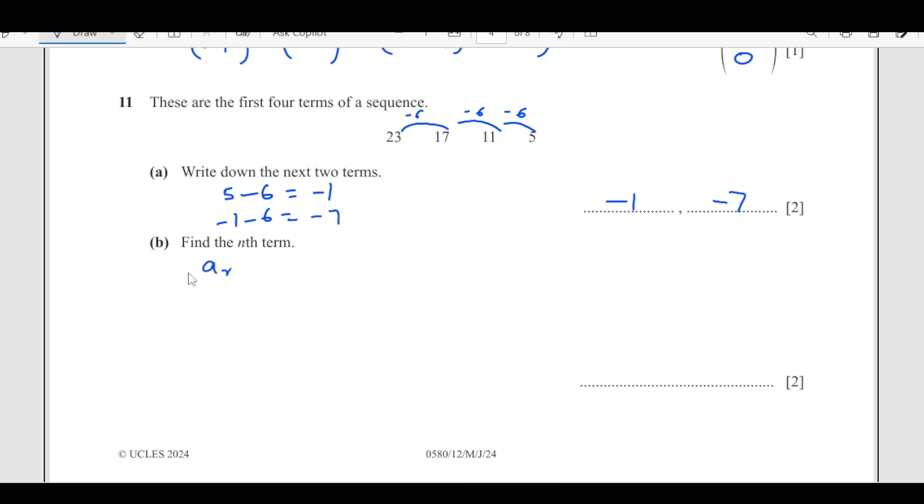Find the nth term. The formula of nth term is a plus (n minus 1) times d, where a is the first term, which is 23, and the common difference is negative 6. Expand the bracket, this is 23 minus 6n plus 6, which is 29 minus 6n.